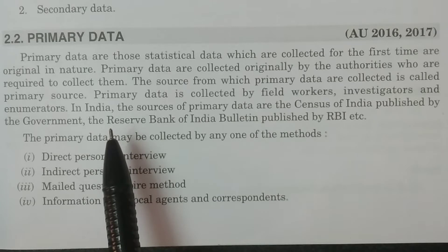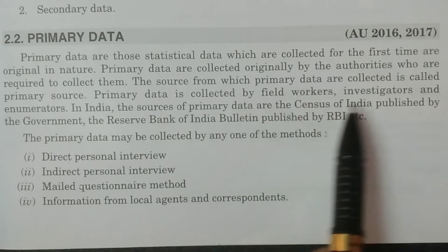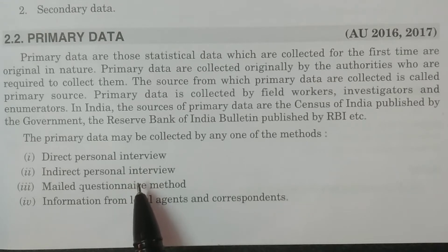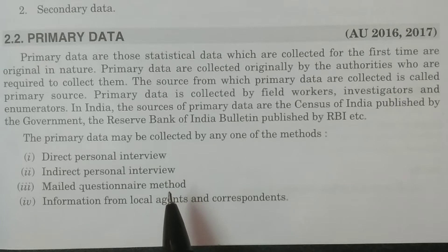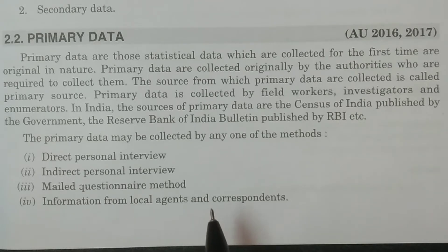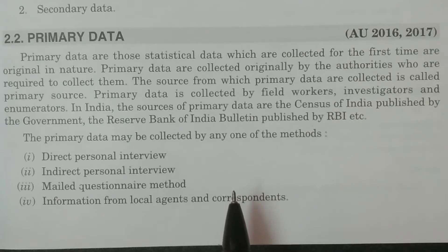Primary data is collected by those who are required to collect them — by field workers, investigators, or enumerators. The census of India is one such example, collected in our country every 10 years. The census covers many variables: number of persons, how many male, how many female, data relating to trade, income, expenditure, and everything. Such a collection is made for the first time and is original in nature, hence it is called primary data.